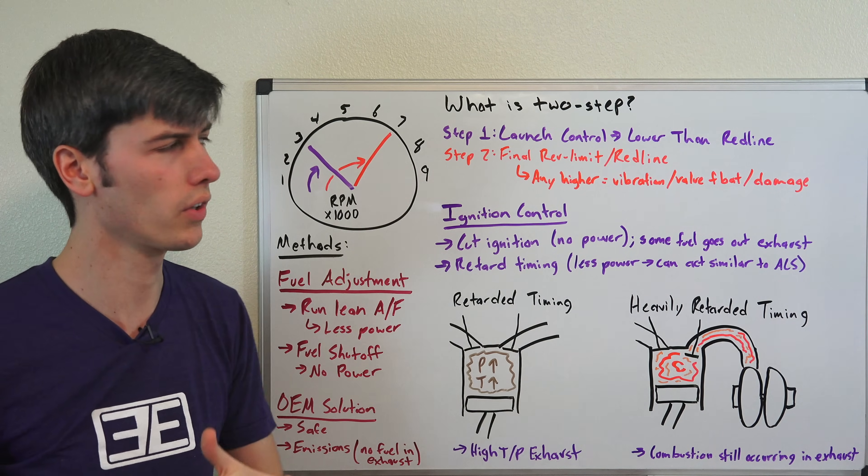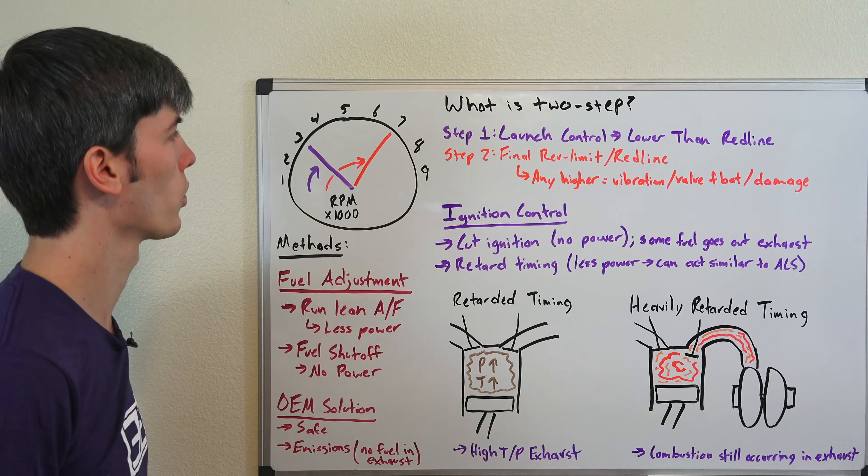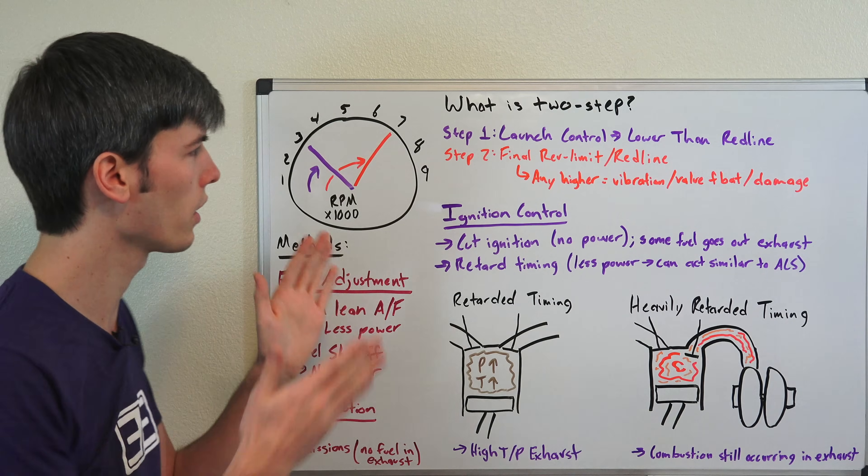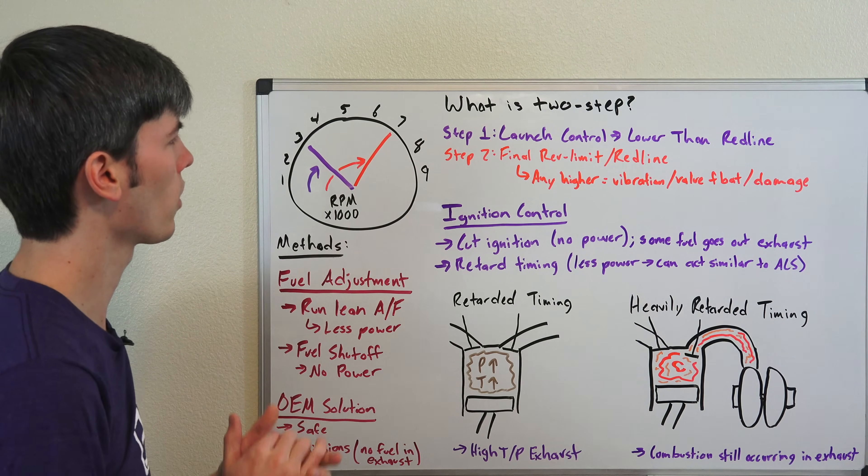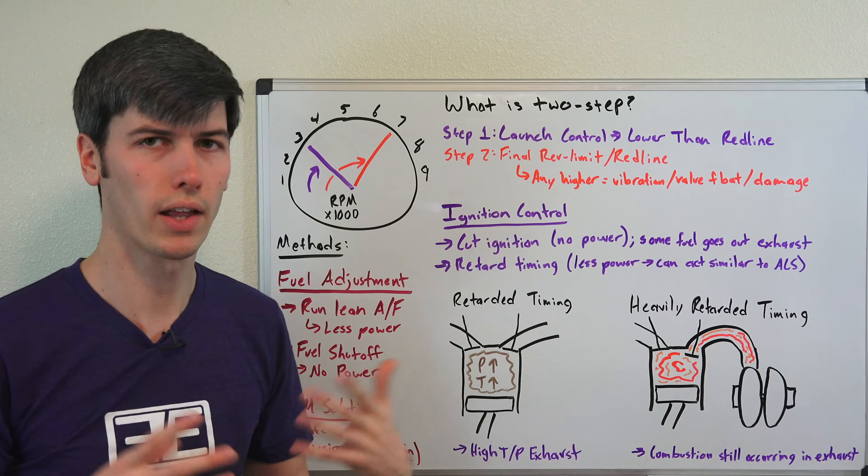And that's going to try and prevent excessive vibration, valve float from occurring, anything that could damage your engine if it were to exceed red line. And so you've got two different set rpms at which you're going to have these rev limiters. And so that's what two-step is.